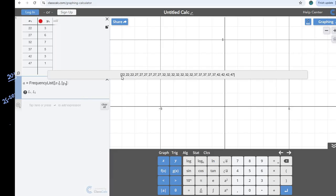Basically, what ClassCalc has done is it's listed out the 22 three times, the 27 six times, etc.